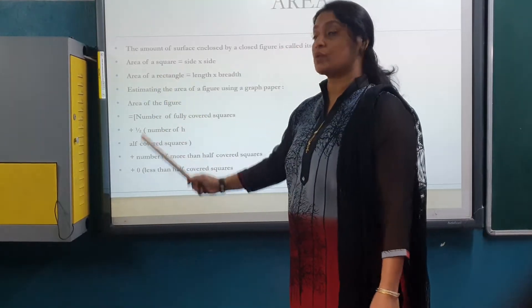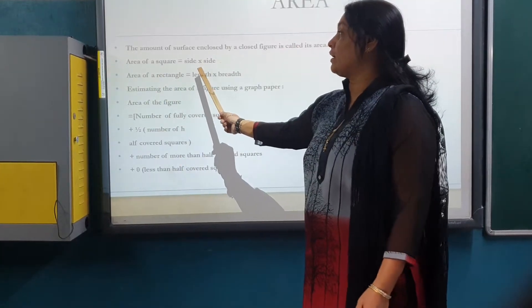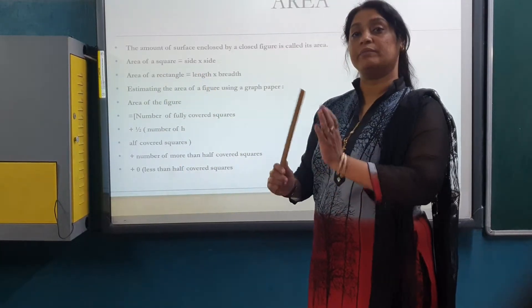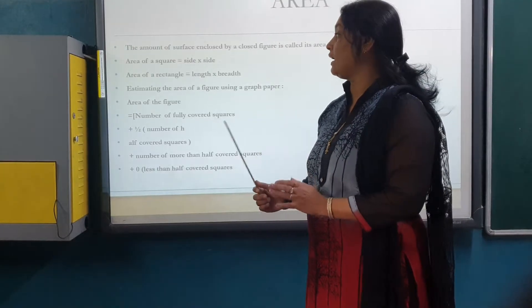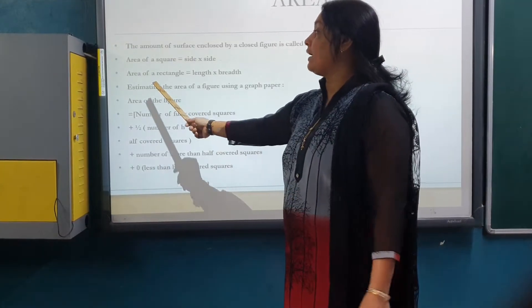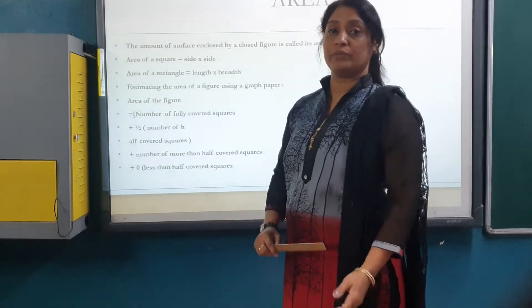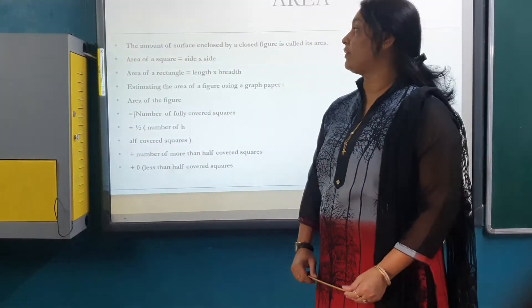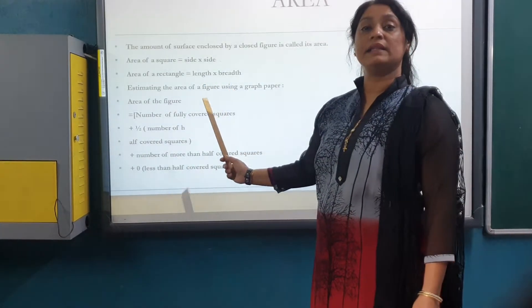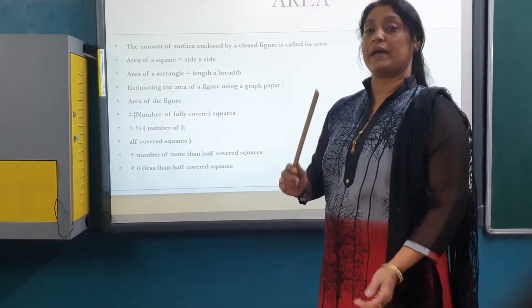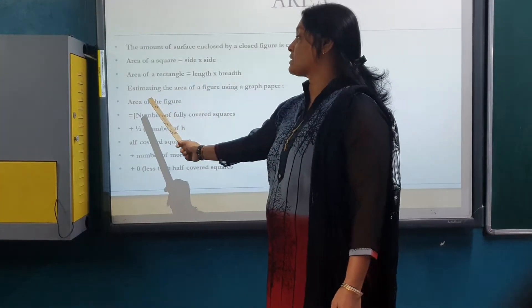Area of a square: side multiply by side. Then area of a rectangle: length multiply by breadth.